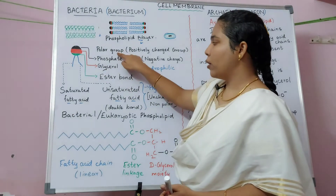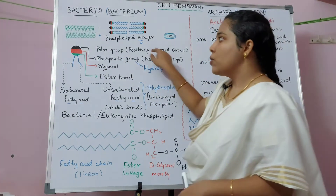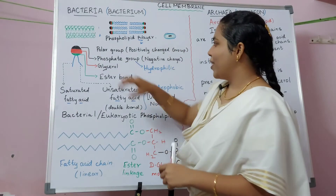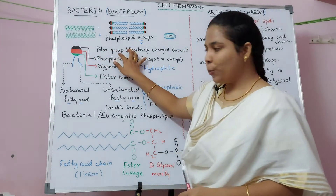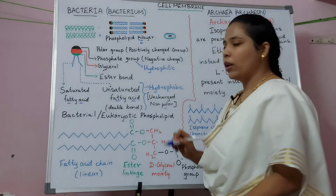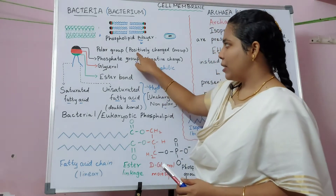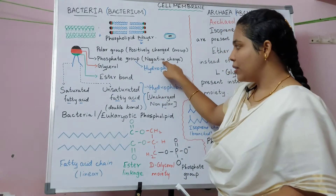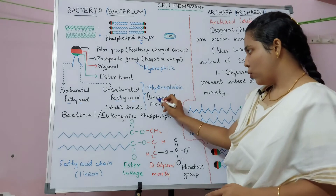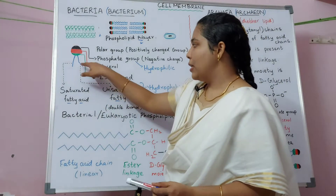The phosphate group is negatively charged. The other portion of the phosphate group is joined to a polar group, which is a positively charged region. So the head portion has a polar group and the tail portion has a non-polar region. The top portion is positively charged, the phosphate is negatively charged, and the fatty acid side chains do not have any charge.